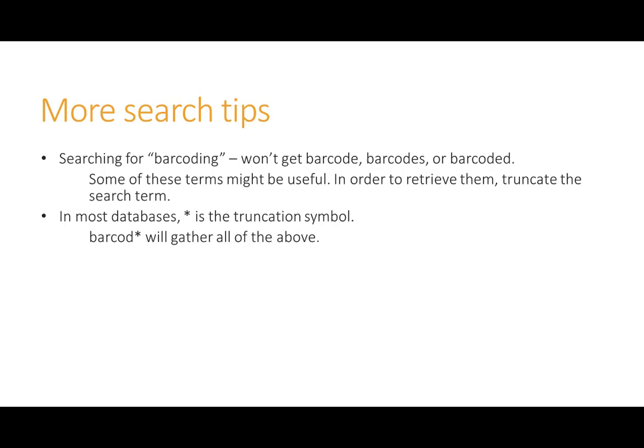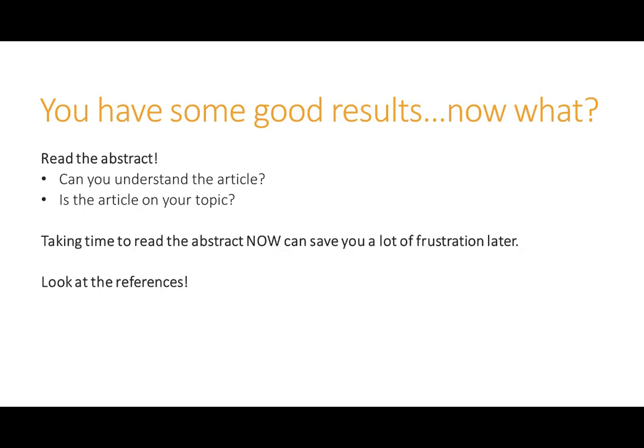Now that you have searched through the literature and found some good results, what should you do? First, read the abstract of the paper. An abstract provides a nice summary of what the paper is about. By reading this, you can first tell if you will actually understand the article. Secondly, it will allow you to know if this article is on your topic. Taking time to read the abstract now can save you a lot of frustration later — you don't want to save it, take it home, and read it a week later to find out that it is not on your topic. Also, look at the references of the paper on your topic. Looking at the references can lead you to other articles that might be relevant to the topic and can be helpful for your research.